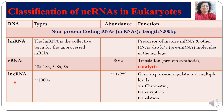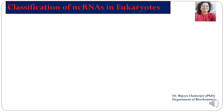The long non-coding RNAs have around more than 1000 types. Their abundance is one to two percent and they are involved in gene expression regulation at the chromatin level, transcription level, and translation level.